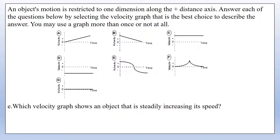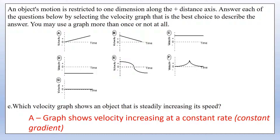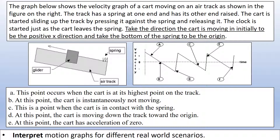Which graph shows an object steadily increasing its speed? A constant rate of change of speed means constant acceleration, so we need a straight-line graph with increasing velocity. We can eliminate graphs showing decreasing speed — that rules out B and E. The remaining straight-line graph with increasing velocity is graph A.